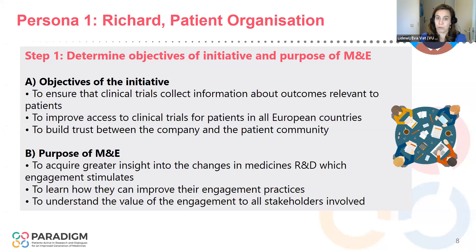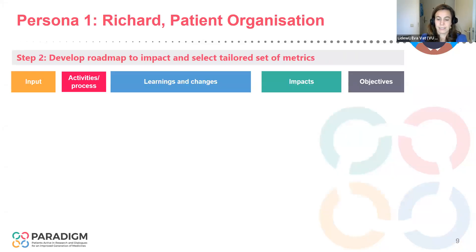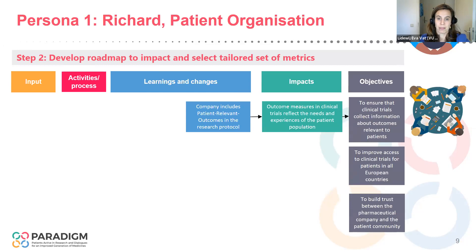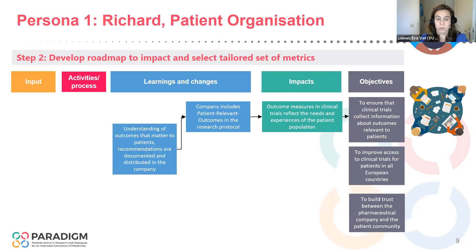Some may really want to learn how we can improve our engagement practice. Others may want to acquire insights into whether their input is making a difference for medicine's development. And everyone probably wants to know what's the value of engagement for all involved. Step two is to visualize how you're going to reach those objectives. You basically walk backwards — if we want to ensure that clinical trials collect information relevant to our patient community, then the trials really have to measure those outcomes that reflect the needs and experiences of the patient population.